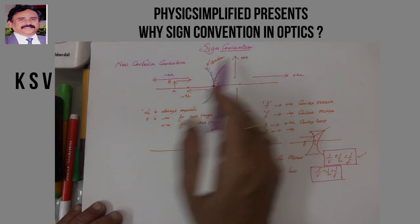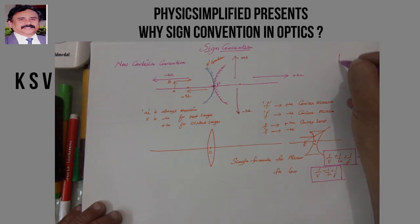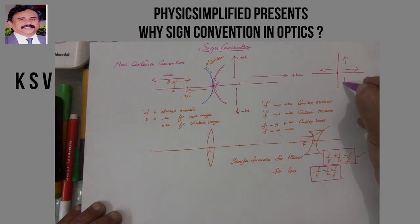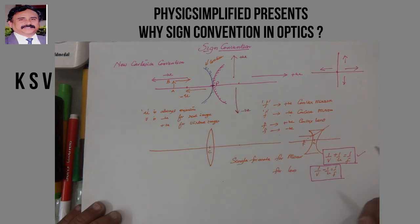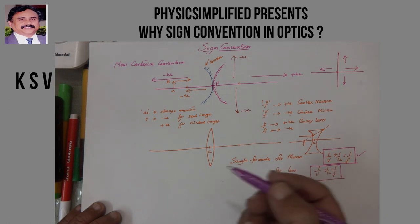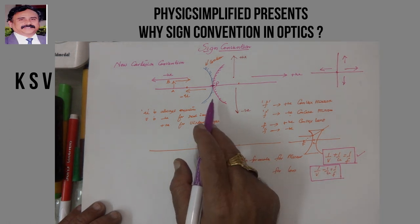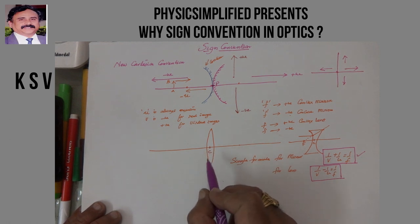So now we have discussed the new Cartesian sign convention. If you remember the graph paper: the center or origin is the reference point, right side is positive, left side is negative, up side is positive, down side is negative. But in this case the object should always be on the left-hand side. Remember: the pole is the origin for mirrors and the optical center is the origin for lenses.